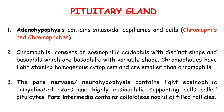The pars nervosa or neurohypophysis contains light eosinophilic unmyelinated axons and highly eosinophilic supporting cells called pituitocytes. Pars intermedia contains colloid eosinophilic filled follicles.